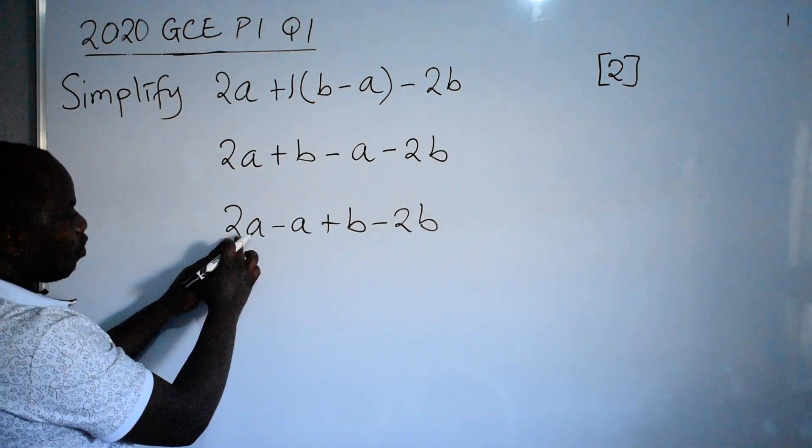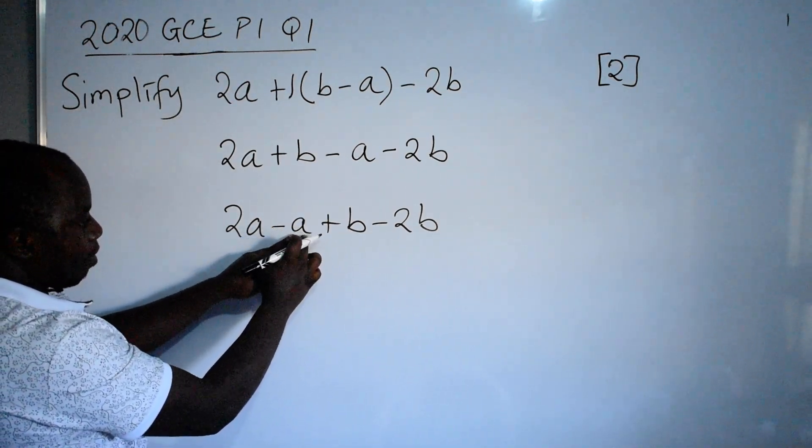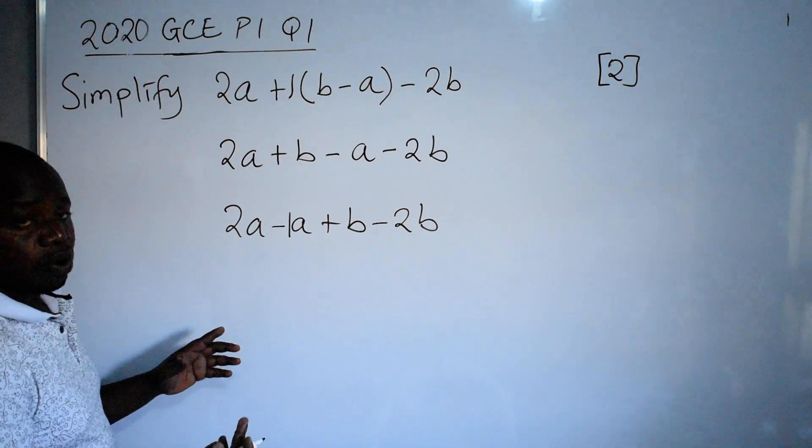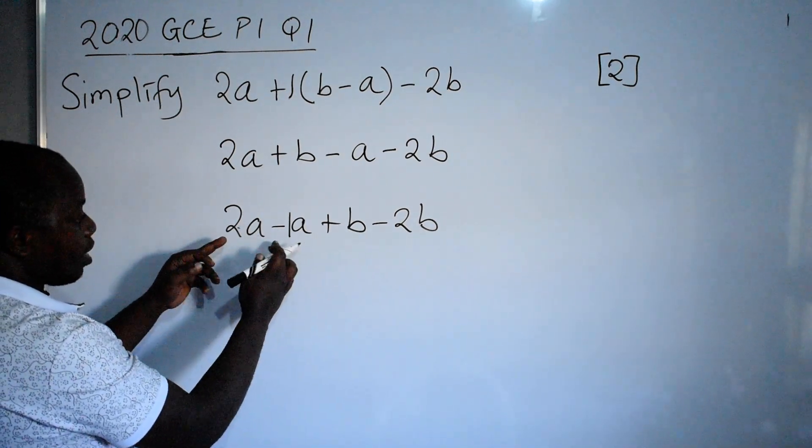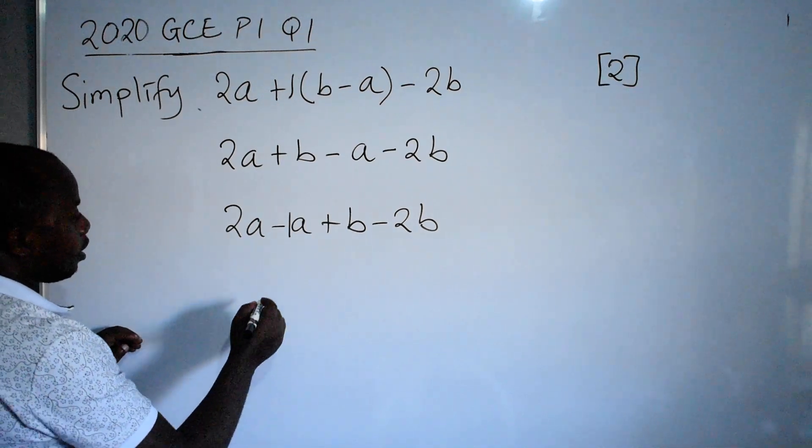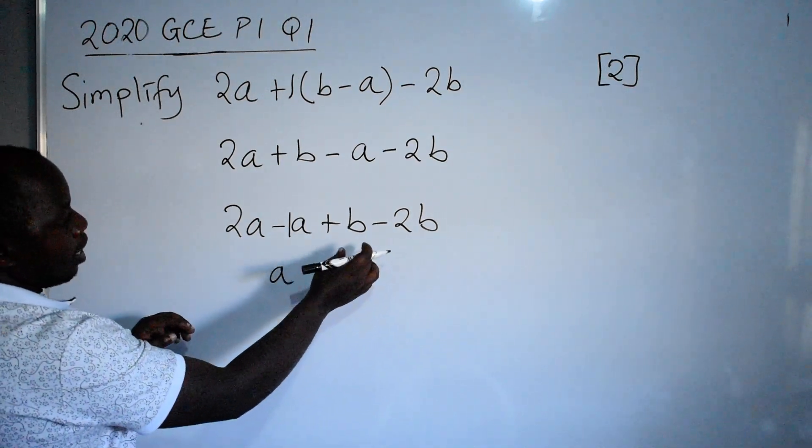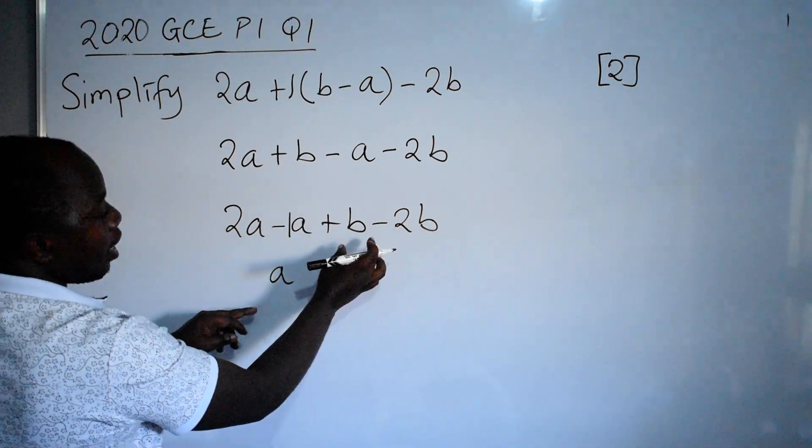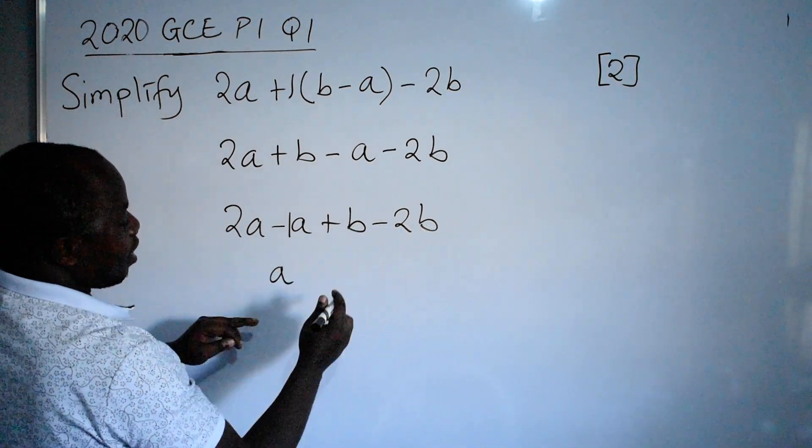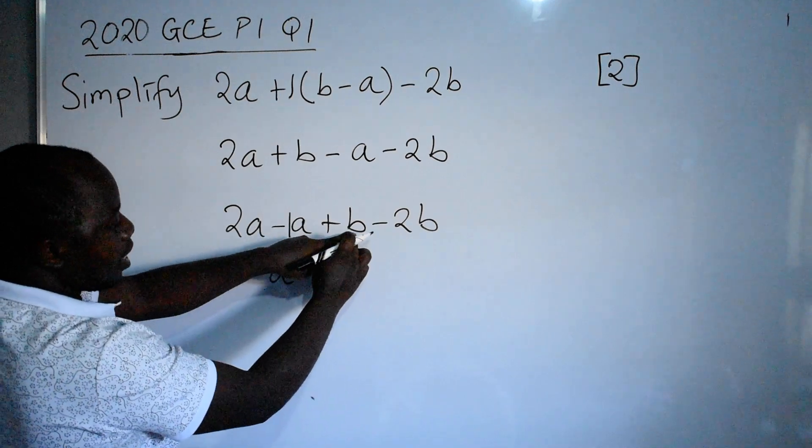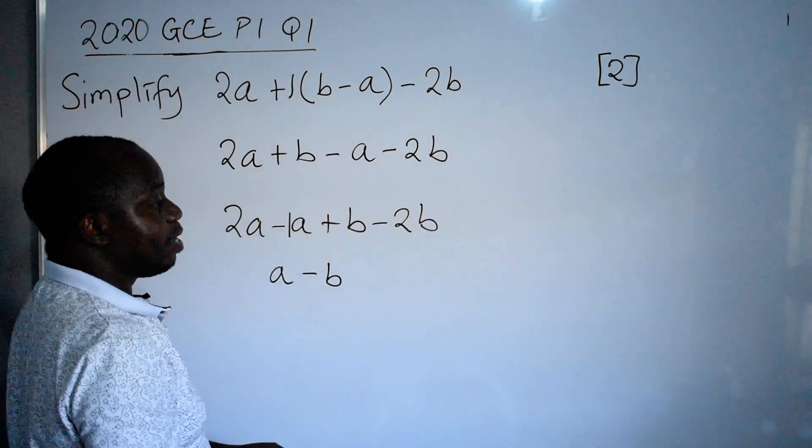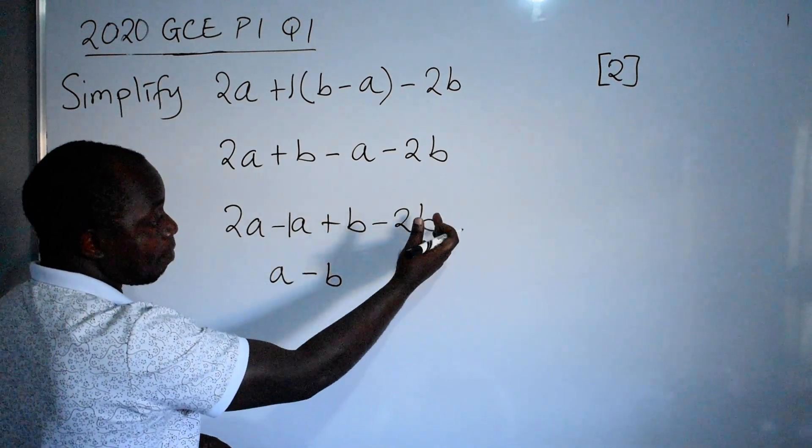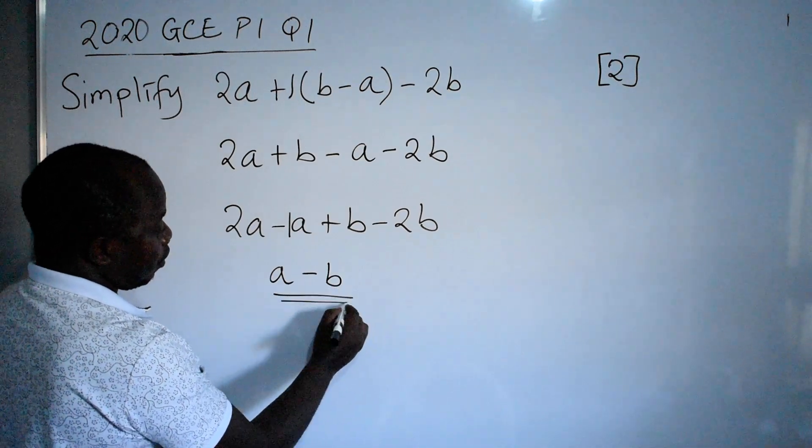Then what is 2a minus a? Here it means we have a 1, so that is the same as saying 2 minus 1. That is 1. So that 1, because we have the variable a here, we are not going to say 1a, you just say a. Then on the other side here, we have b minus 2b. So b minus 2b, that is minus b. Because here there is a 1, so that is the same as 1 minus 2, that is negative 1. So that negative 1b, you just say b. So this is your final answer. You get your 2 marks.